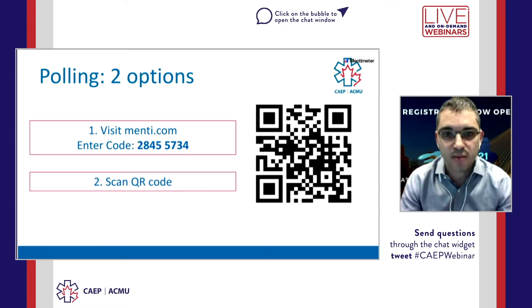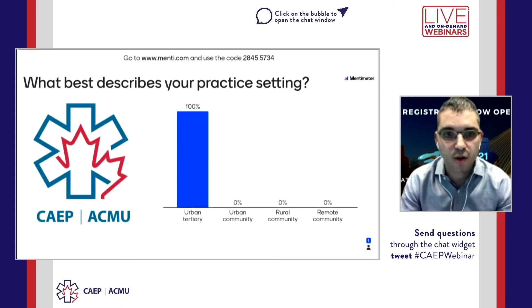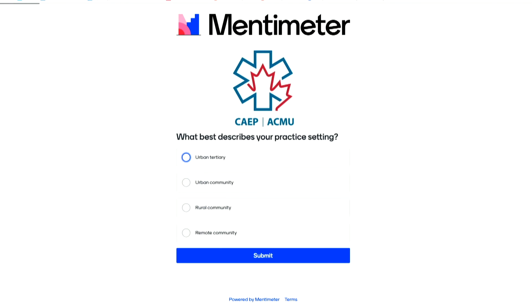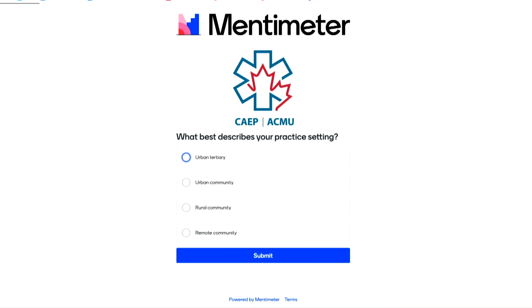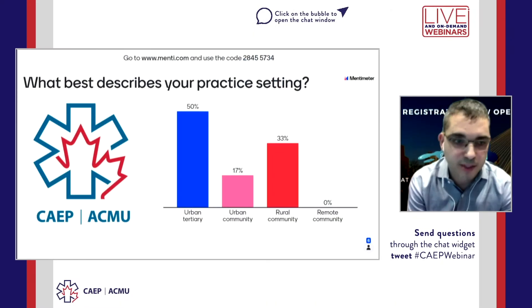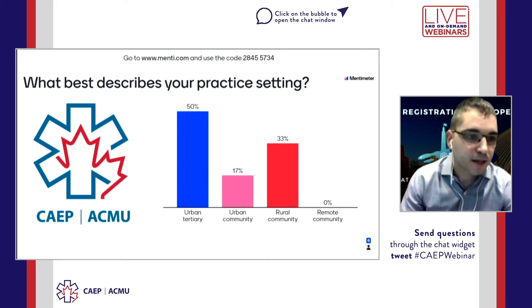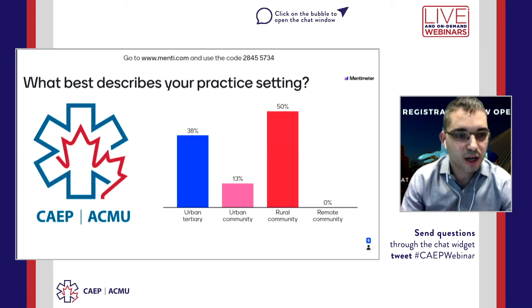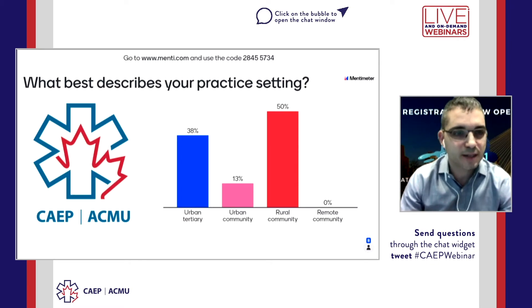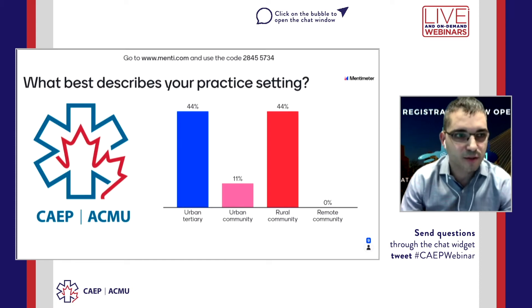Let's try this to get everyone warmed up. Here's the first polling question to learn a little bit more about today's audience. Please go ahead and enter your code and answer the following question about your practice setting: What best describes your practice setting? A) urban tertiary, B) urban community, C) rural community, or D) remote community? We got a good representation from rural community, urban tertiary, and urban community. Thank you all for contributing, and we'll be doing this throughout the webinar.